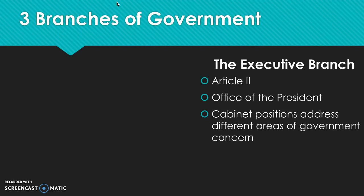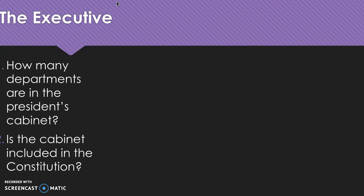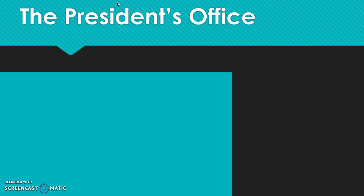The executive branch is described in Article 2 of the Constitution. You might remember the Articles of Confederation did not have an executive branch — this is, simply put, the office of the president. Over time, the executive branch has evolved because more and more cabinet offices have been added.